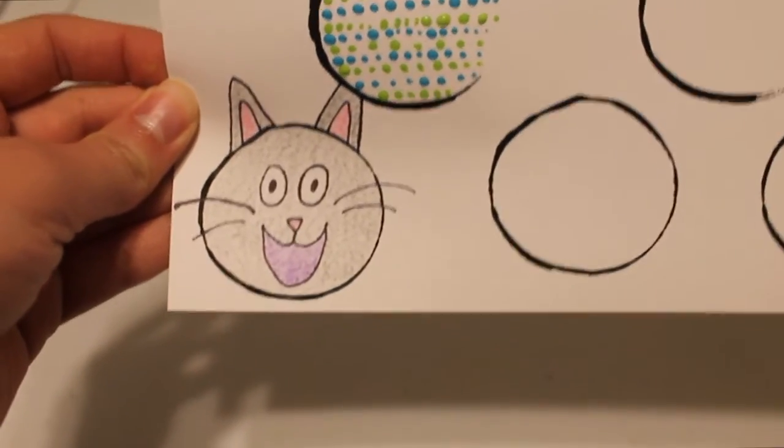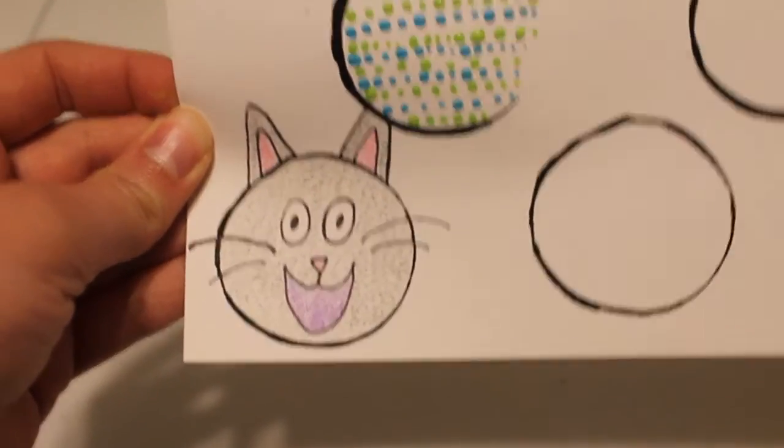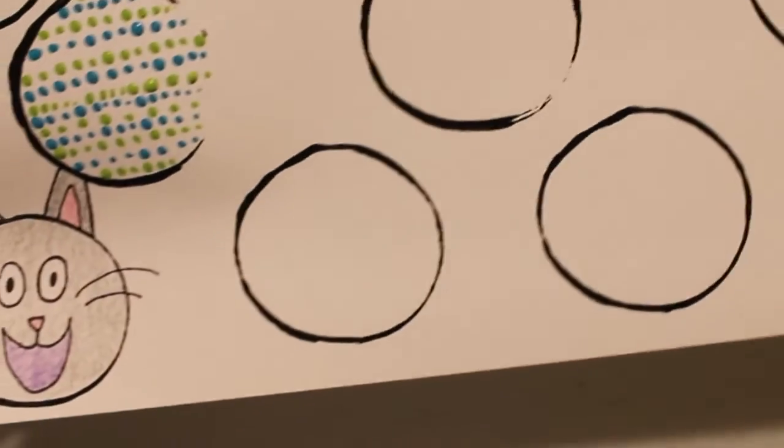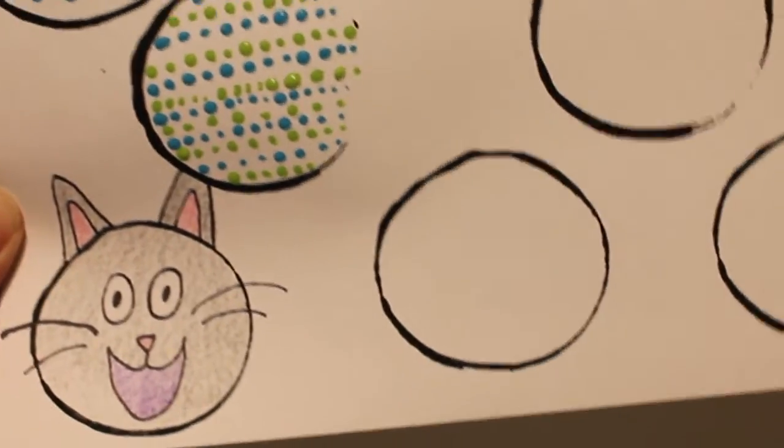So here's the cat. I went over it with Sharpies and I colored it with colored pencils and I think it looks cute. So now I have some other circles that need to be transformed and so I'm going to start working on them now.